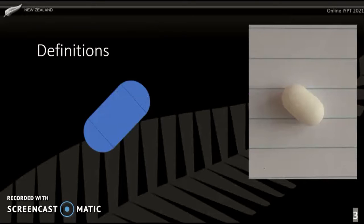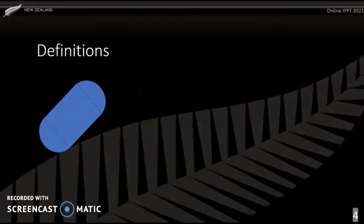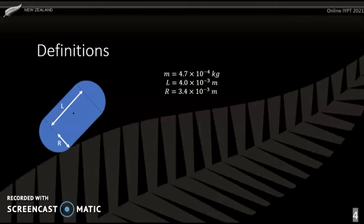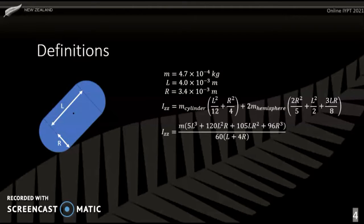For this investigation, I am defining a capsule shape to be a cylinder with two hemispheres attached to the ends, and I will be assuming that a tic-tac is a capsule shape. The mass of the tic-tac, length of the cylinder, and radius of the hemispheres is shown here. The rotational inertia of the tic-tac around the axis out of the screen through the centre of mass is the sum of a cylinder's rotational inertia plus two hemispheres shifted using the parallel axis theorem. Put in terms of the tic-tac's mass, it's this, which for my tic-tac evaluates to this.